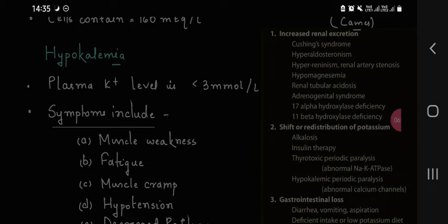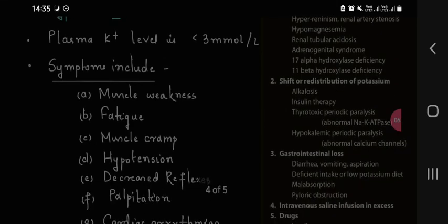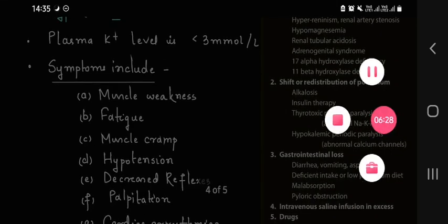Periodic paralysis: abnormal sodium potassium ATPase, abnormal calcium channels. Gastrointestinal loss: diarrhea, vomiting, aspiration. Deficient intake or loss. Deficient intake.